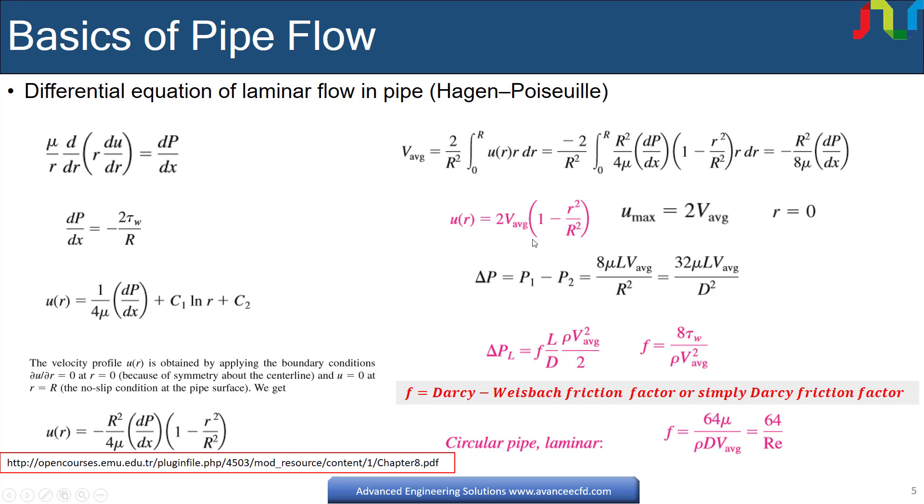Here average velocity is given as negative radius squared divided by 8 times viscosity and multiplied whole by pressure gradient. Therefore, velocity profile is given by twice the average velocity multiplied by 1 minus R squared by R squared. By setting R equals 0, since we know that at center line velocity is maximum, we can see that the maximum velocity is equal to twice the average velocity.